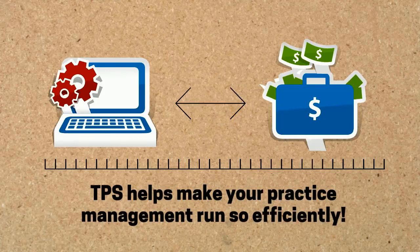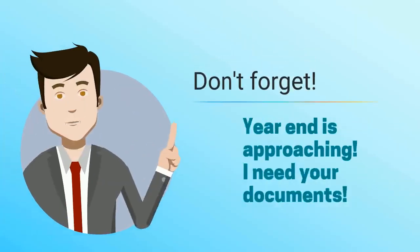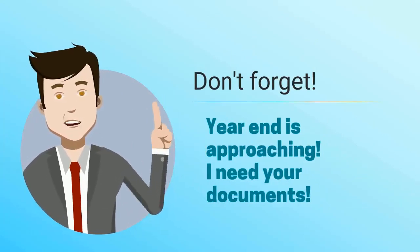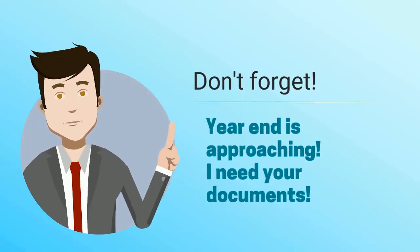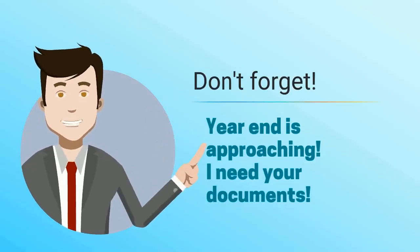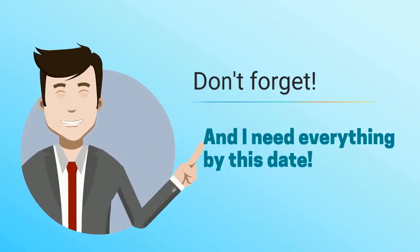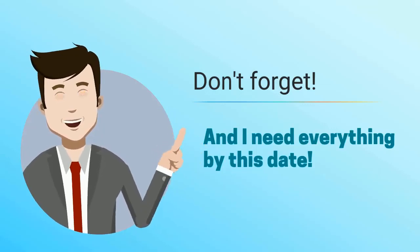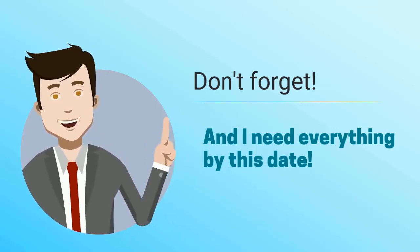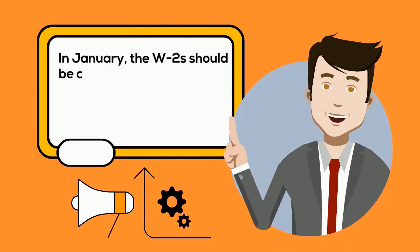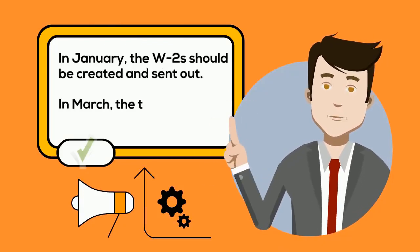Let's get back to the example of the December 31st year end company. In the US, a December 31st S-Corp needs to file their return by March 15th. So what that means to the accountant is that sometime in December, he has to notify the client that their year end is approaching and remind them of the documents needed to complete the year end and when they need to be delivered to the office. In January, the W-2 should be created and sent out, and then in March, the tax filing needs to be completed.